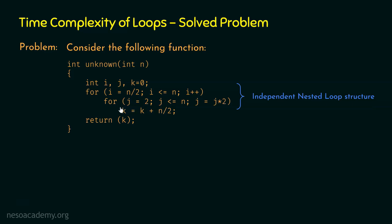This structure is an independent nested loop structure. We are focused on the statement k = k + n/2, since we need to find the value of k. We are adding n/2 to k in each iteration of these two for loops. In the first iteration, k becomes n/2, because the initial value of k is 0, so 0 + n/2 = n/2.